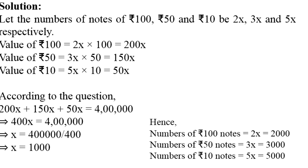2x के साथ multiplication करने के बाद मेरे पास 100 रुपए वाले notes की संख्या हो जाएगी 2000। और 50 रुपए वाले notes की संख्या हो जाएगी 3000 और 10 रुपए वाले notes की संख्या हो जाएगी 5000। Easy, है ना!